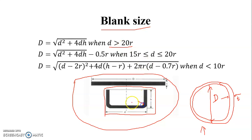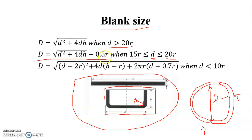We get the blank size formula: capital D = √(d² + 4dh), when small d ≤ 20r, where r is the radius of curvature of the cup. If small d is greater than 20R, then the blank size is capital D = √(d² + 4DH). If the cup size varies between 15R to 20R, then the blank size is capital D = √(d² + 4DH − 0.5R). And for cup size small d less than 10R, the blank size will use the corresponding formula.